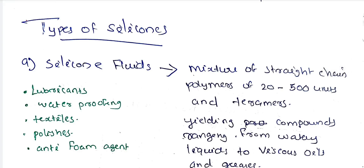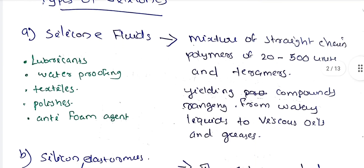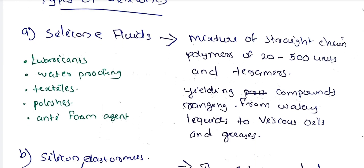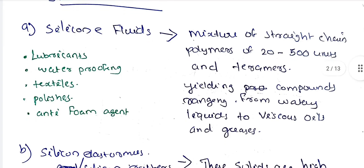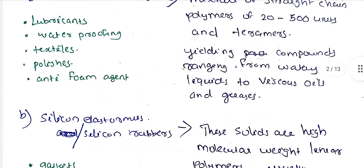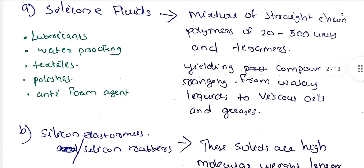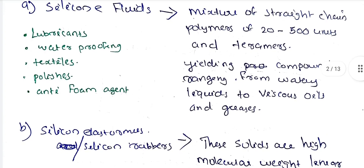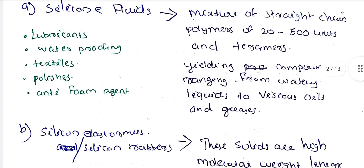Silicon fluids are a mixture of straight-chain polymers of 20 to 500 units, ranging from watery liquids to viscous oils and greases. Examples of use include lubricants, waterproofing, textiles, polishes, and defoamers.